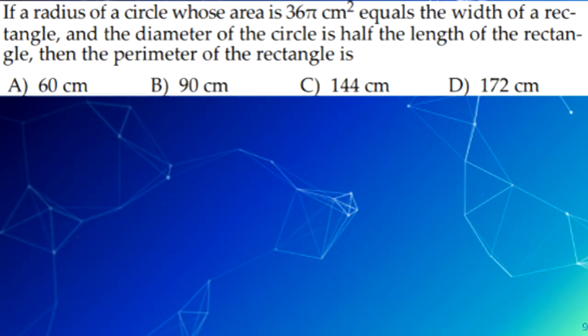The next question is, if the radius of a circle whose area is 36 pi centimeters squared equals the width of a rectangle, and the diameter of the circle is half the length of the rectangle, the perimeter of the rectangle is. A radius of a circle with an area of 36 pi centimeters squared is 6 centimeters. So the width of a rectangle is 6 centimeters, and the diameter of the circle is 12 centimeters.